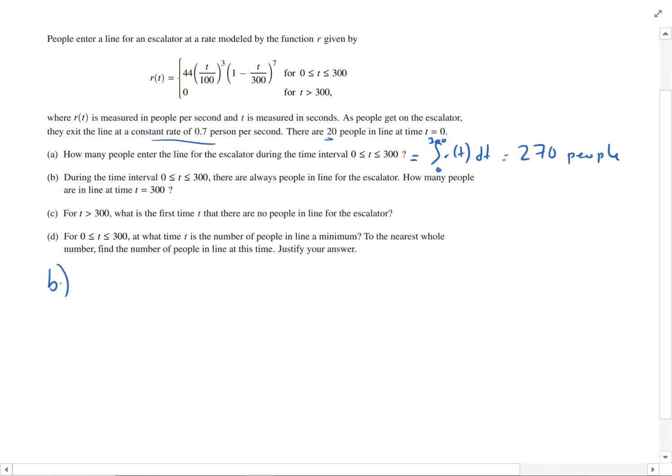So for this, we need to create an equation that models how many people are in the line at any given time. So we're going to call this F of T and it equals 20 plus the integral of 0 to T of R of T, DT,